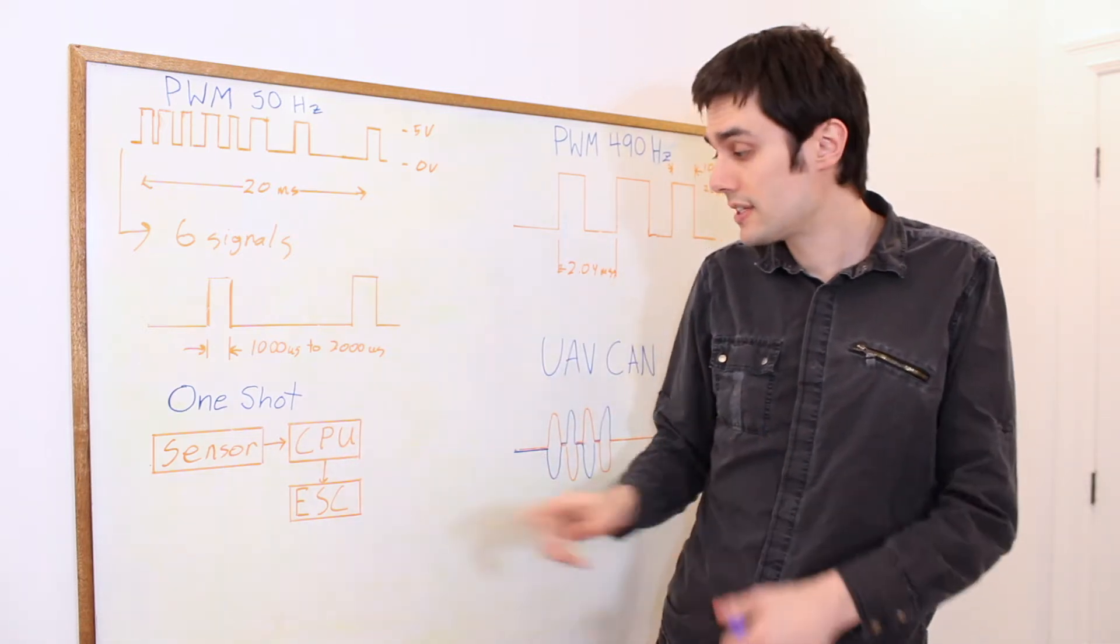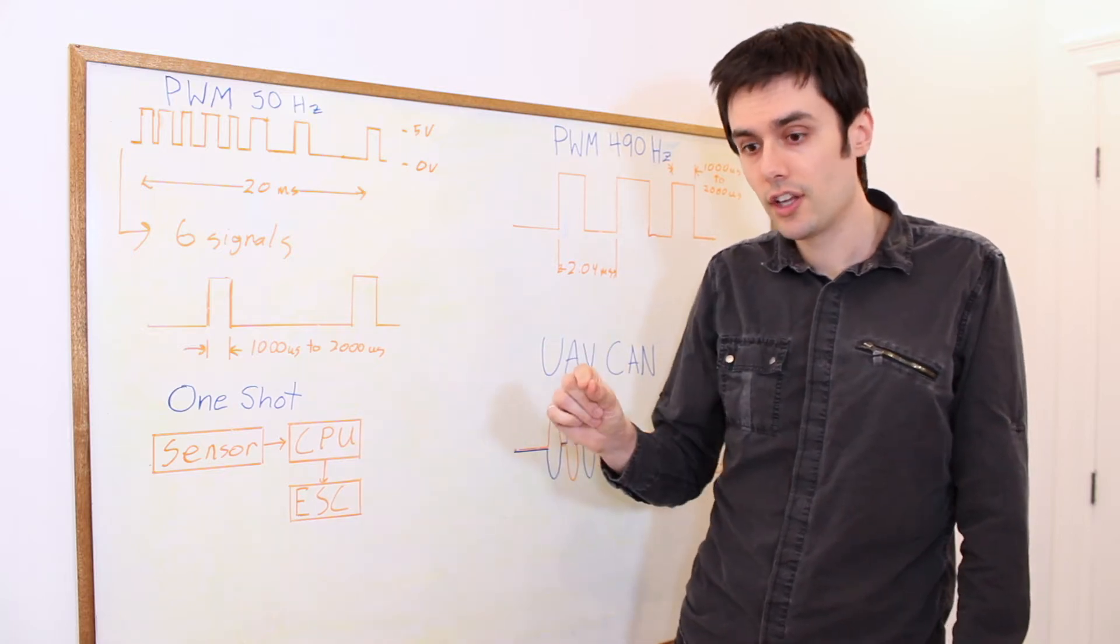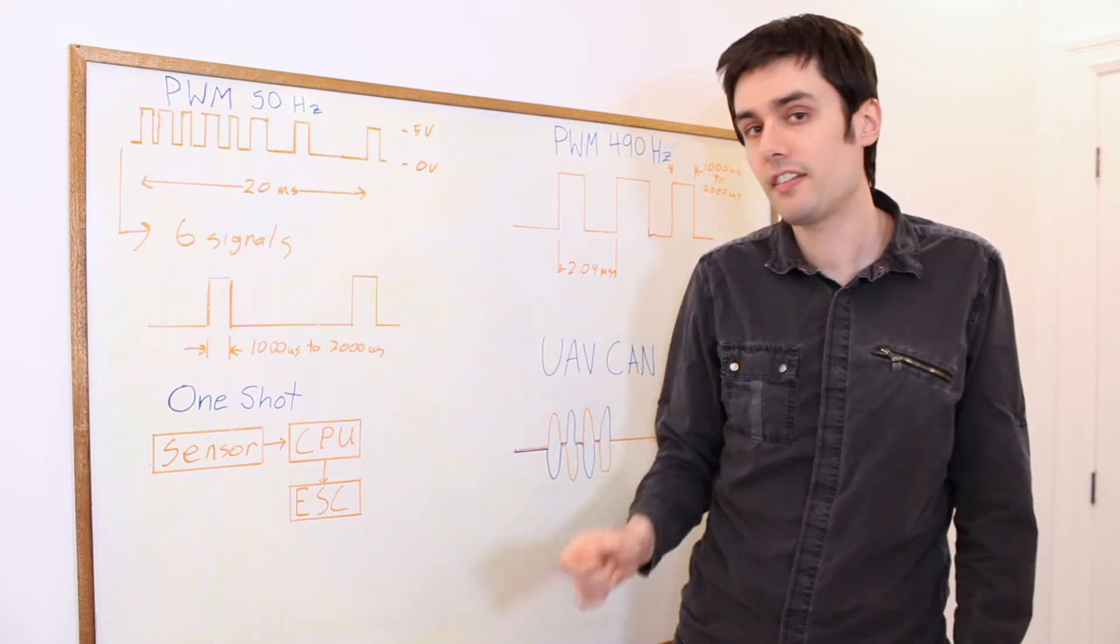OneShot synchronizes the update between the CPU and the ESC, and it reduces the length of your 100% value from 2000 ms to 125 ms.